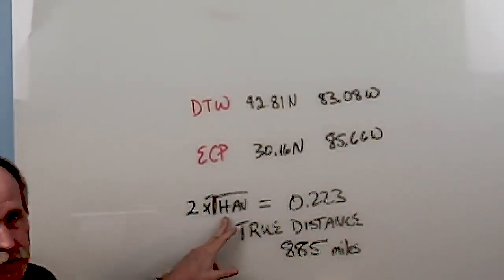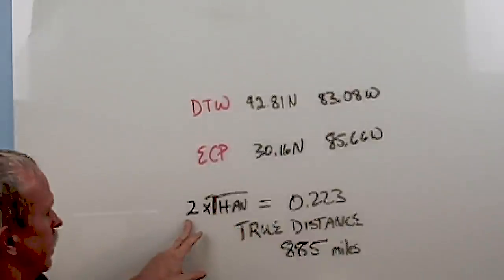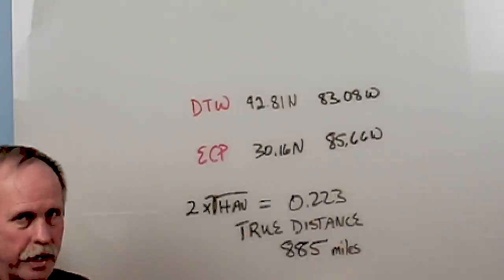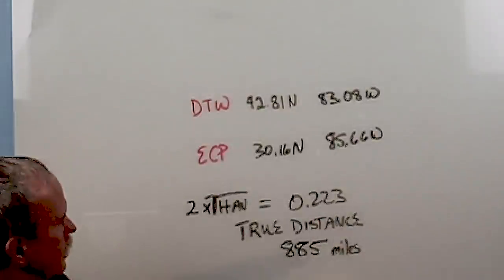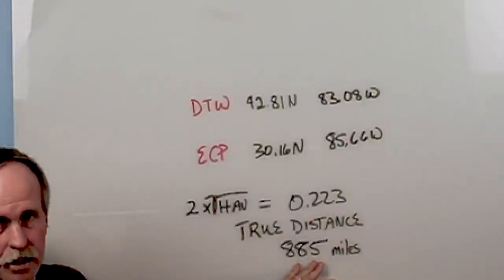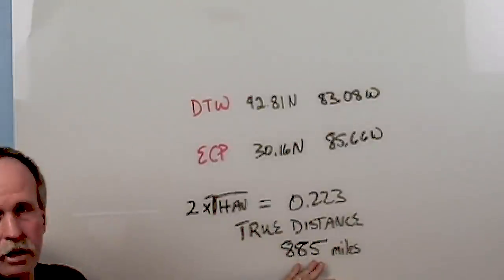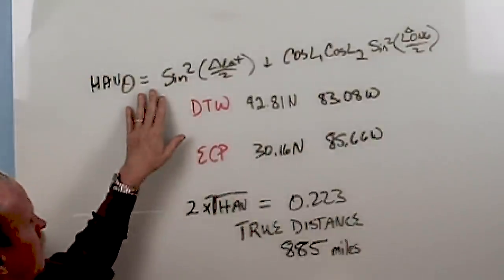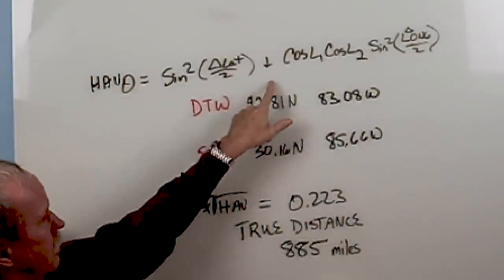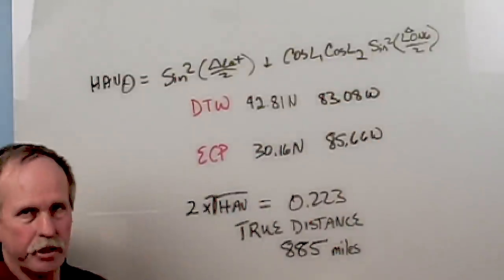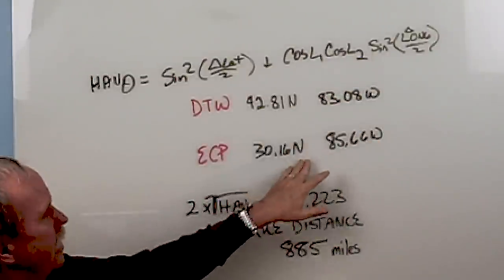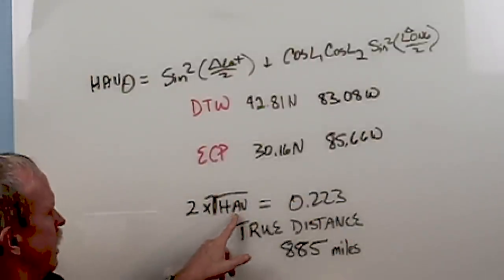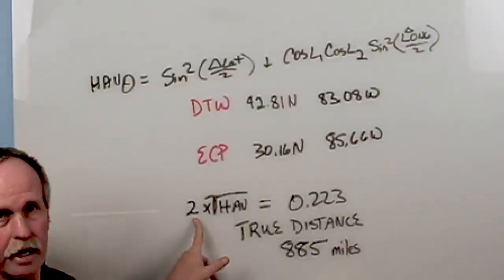If you find the square root of the Haverson and multiply it by 2, the answer is going to be 0.223. The true distance between those two points, the known distance, is 885 statute miles. Now, as you recall from the Haverson formula, there is no mention of radius anywhere in that formula. There's no mention of radius in any of these degrees. There's no radius there. There's no radius there.